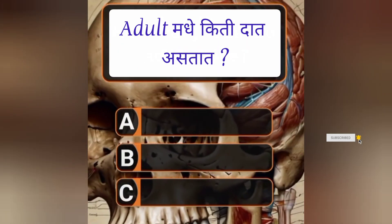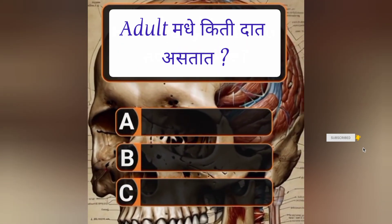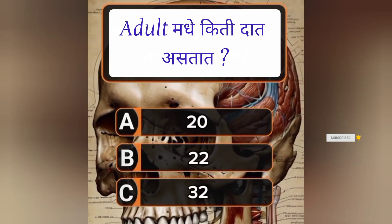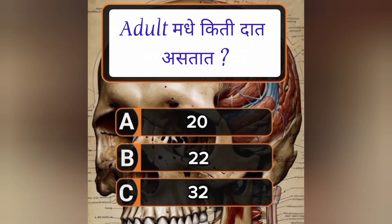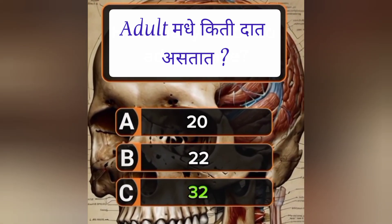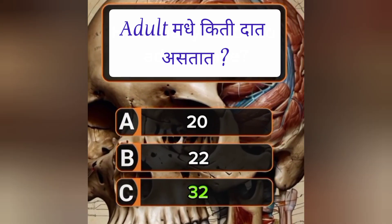How many teeth do adults have? Answer C. 32.